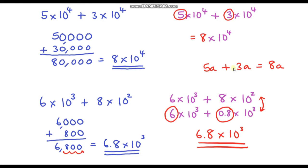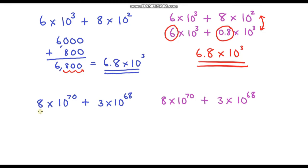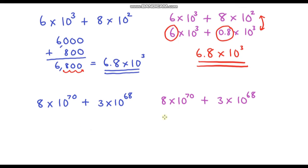You might think the write-it-out method is easier, and that's perfectly normal when powers are small. But what about much higher powers of 10? For example, 8 times 10 to the power 70 plus 3 times 10 to the power 68 — massive powers. We're definitely not writing those out in full; it would involve writing 8 followed by 70 zeros, and then writing out the second number too. That would take an awful long time just to write out the question. So this second method is going to be a lot more efficient.